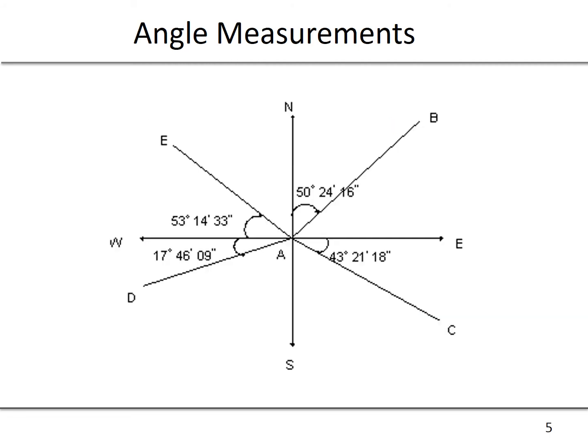For angle measurements we can use azimuths or bearings. Azimuths always use north as the reference angle, and so that angle varies from zero up to 360 degrees.